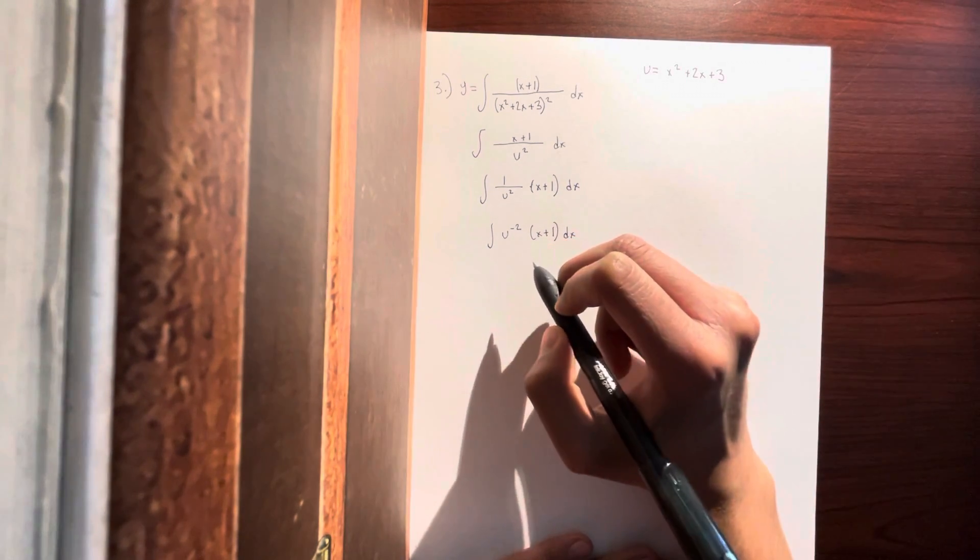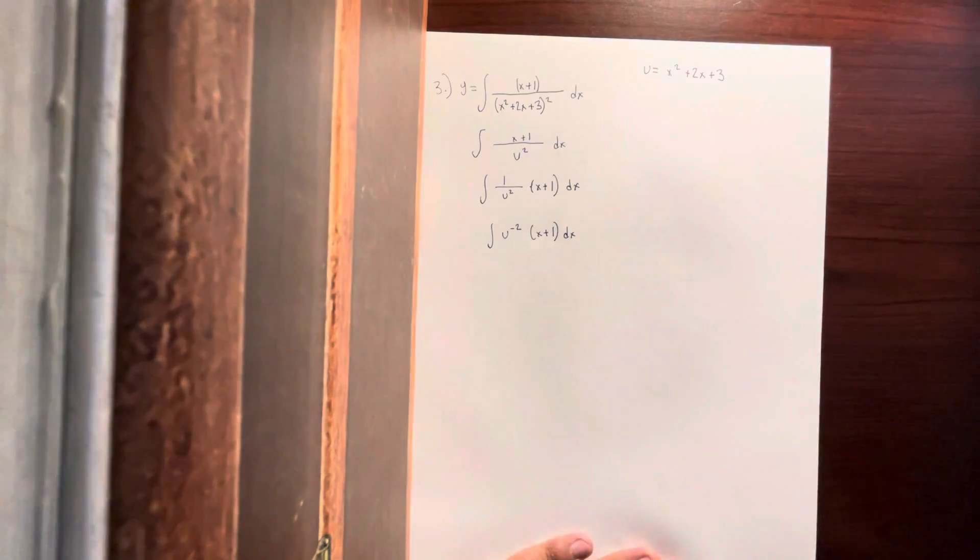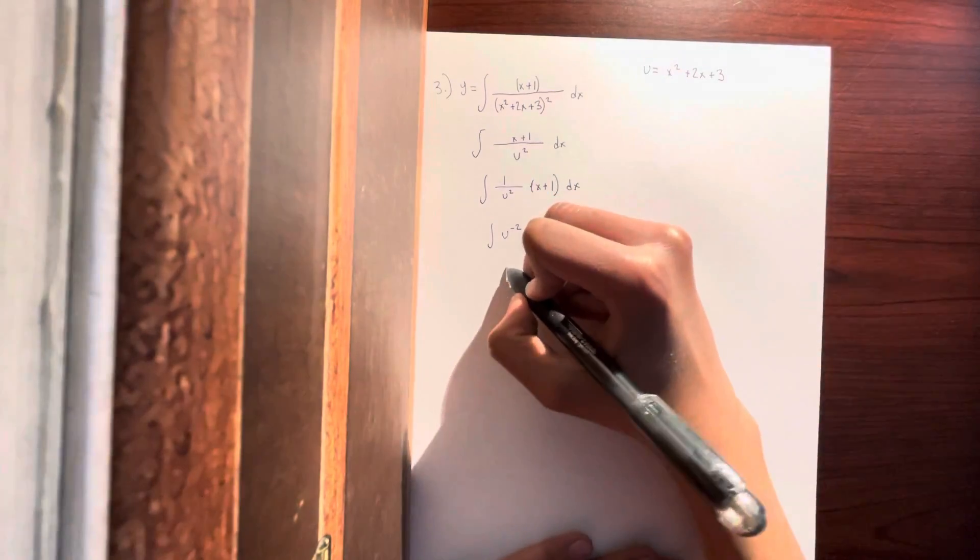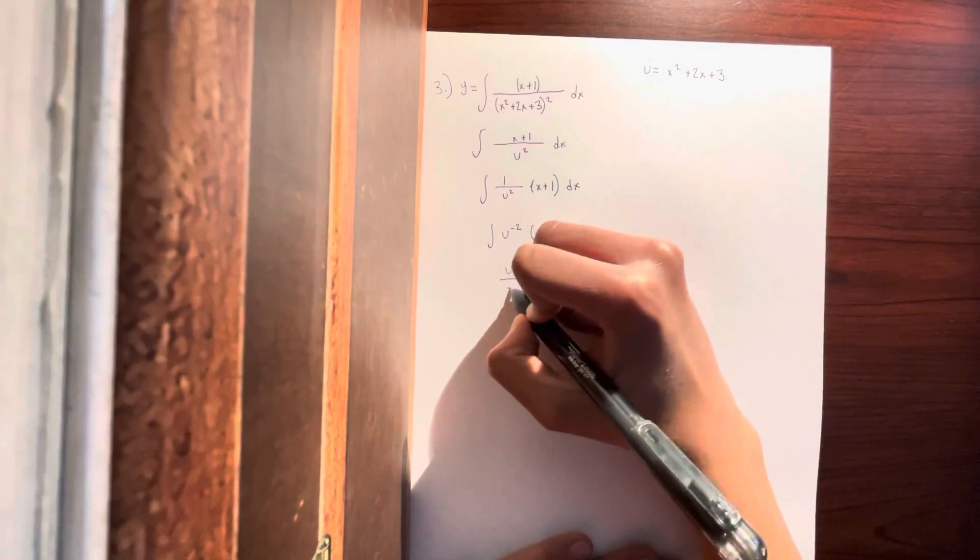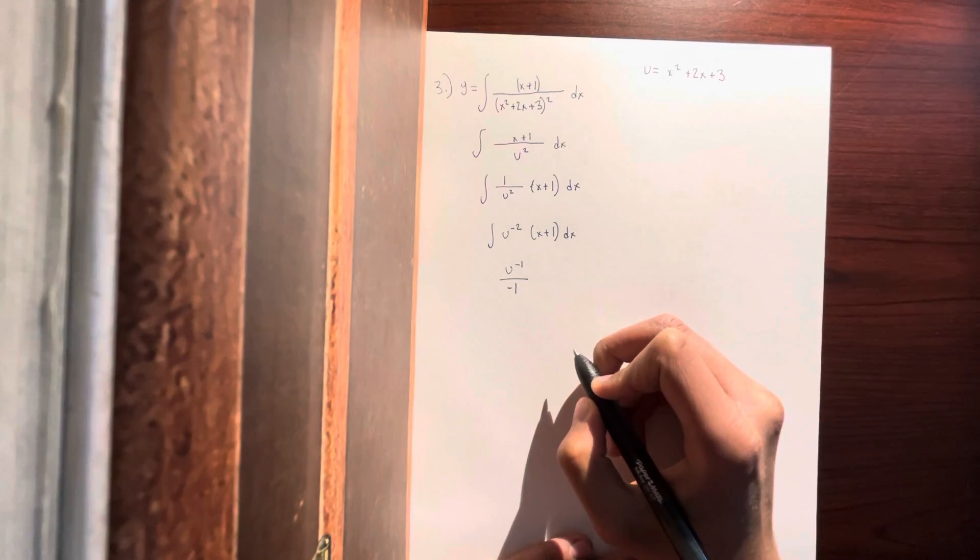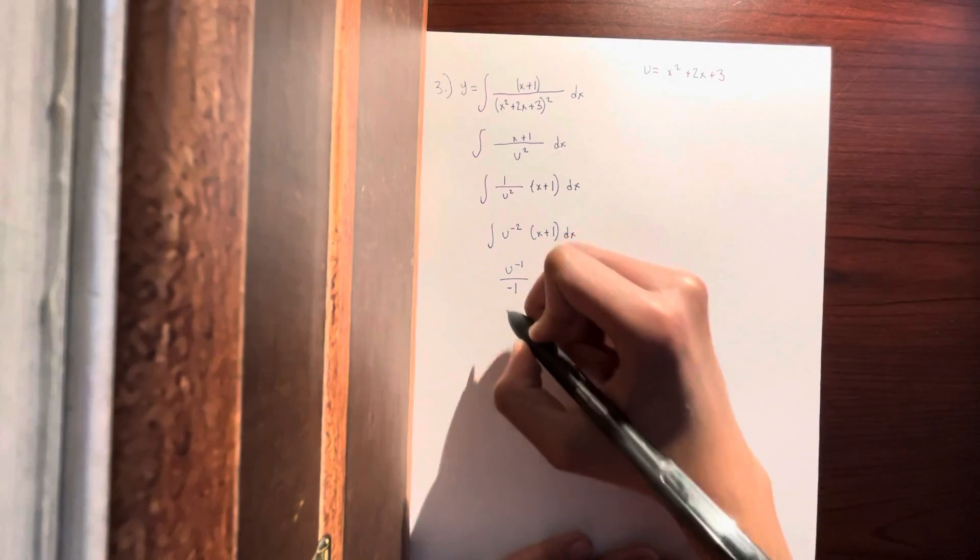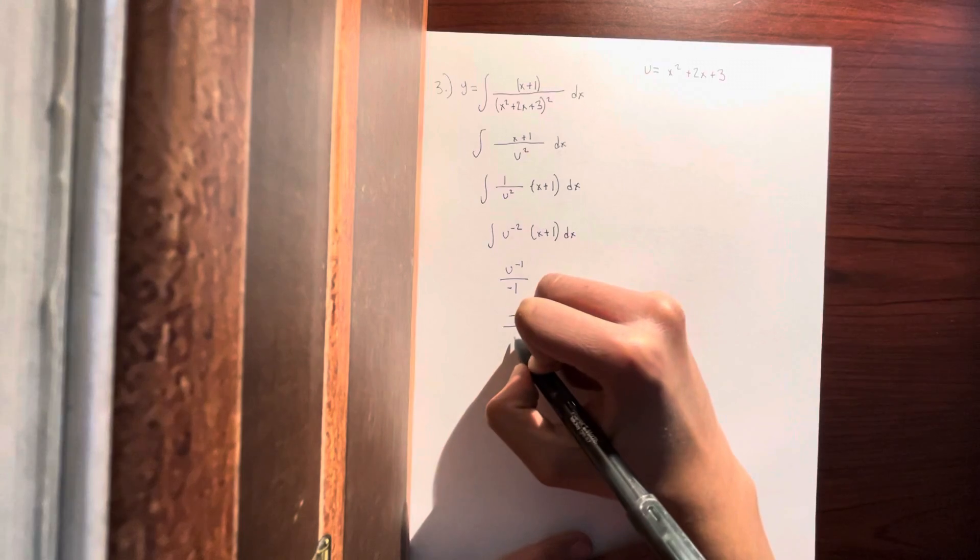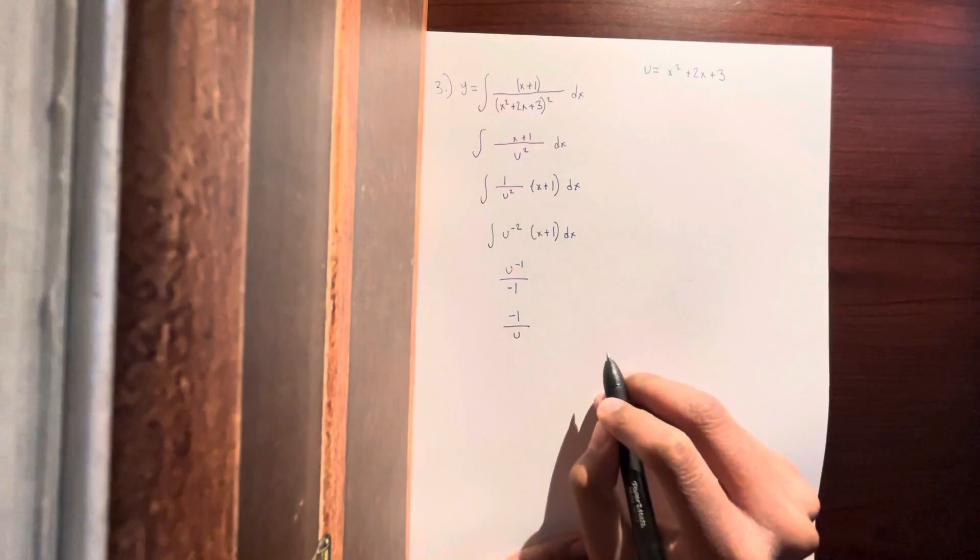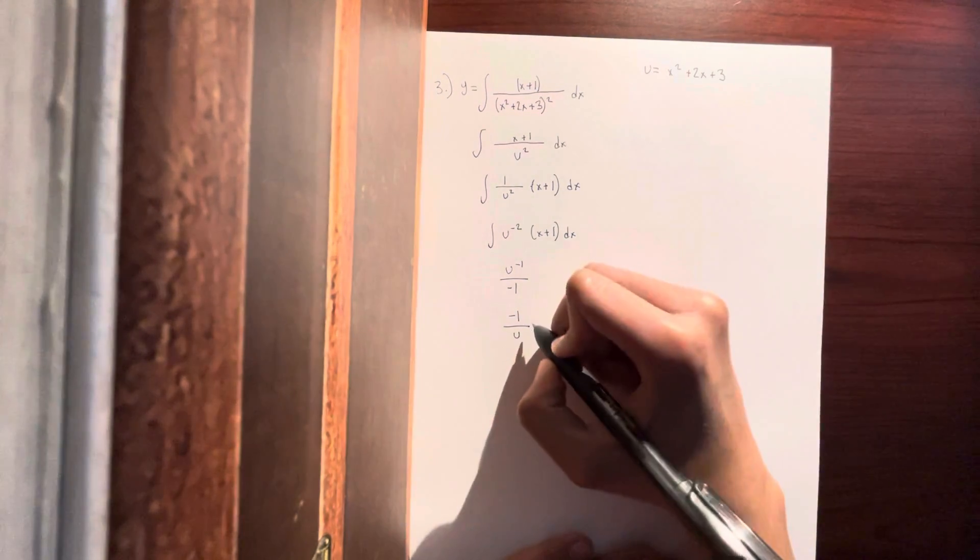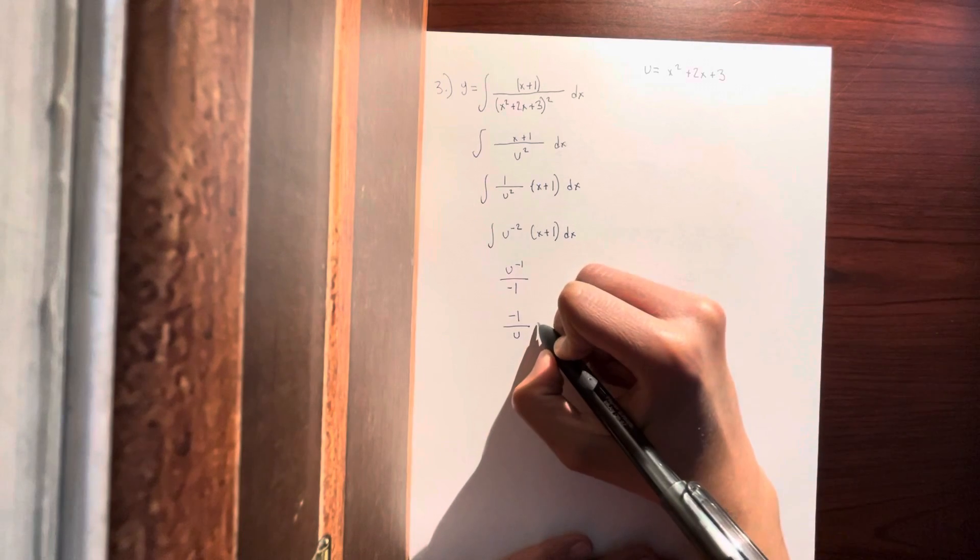You then use the chain rule—sorry, the power rule for integrals. And that will be u^(-1) / (-1). That will then become -1/u times, well, (x + 1) and dx.